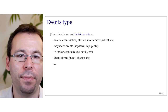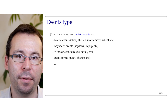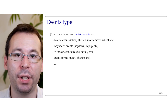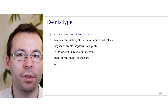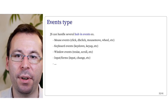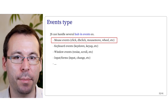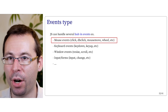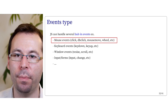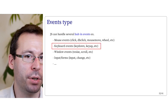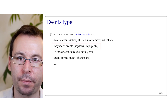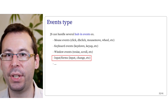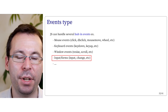We saw examples using the click event. This event is related to clicking on an element, but we can use other types of events with different keywords. You can look at the documentation for all possible events. For instance, with the mouse we can have: click, double click (dblclick), mousemove which is triggered every time the mouse moves, or wheel for the mouse wheel. We can have keydown and keyup for the keyboard. We can detect when the window is resized or scrolled. We can also detect when something happens in input form elements in the HTML.